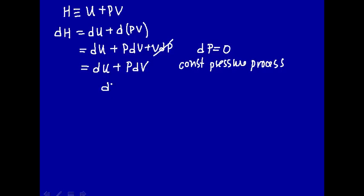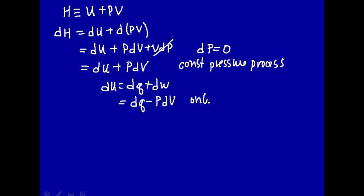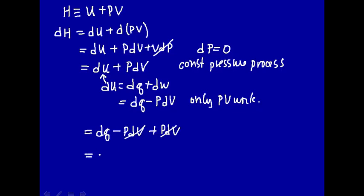Now we're going to use the first law of thermodynamics: dU is equal to dQ plus dW. We're going to apply the restriction that the only kind of work we're doing is pressure-volume work, so this is dQ minus P dV. With constant pressure and only PV work, we substitute in for dU: dQ minus P dV plus P dV. And how convenient — these things cancel out. So this is equal to just dQP, where the P indicates we assumed constant pressure and only PV work.